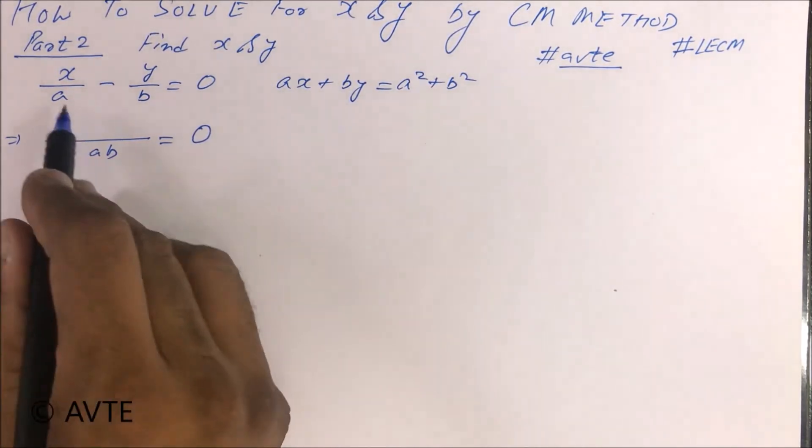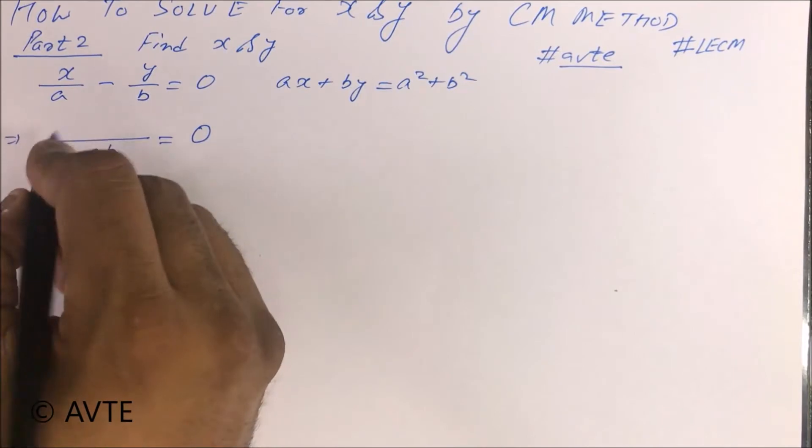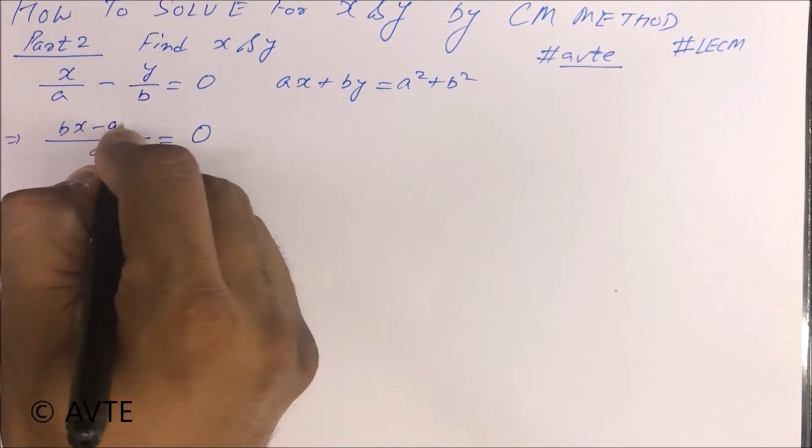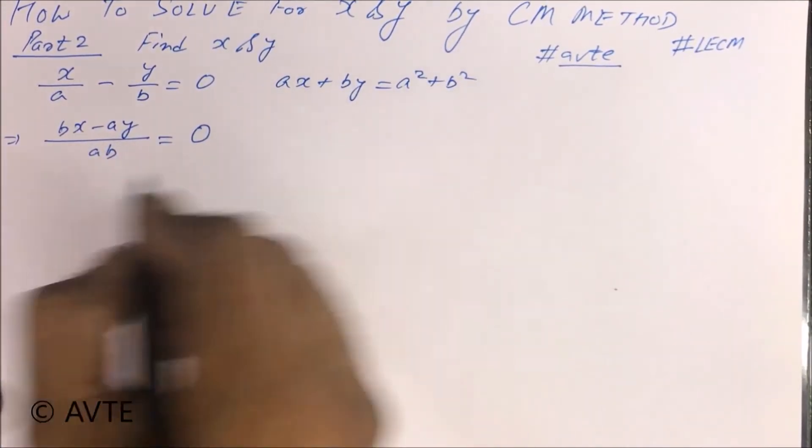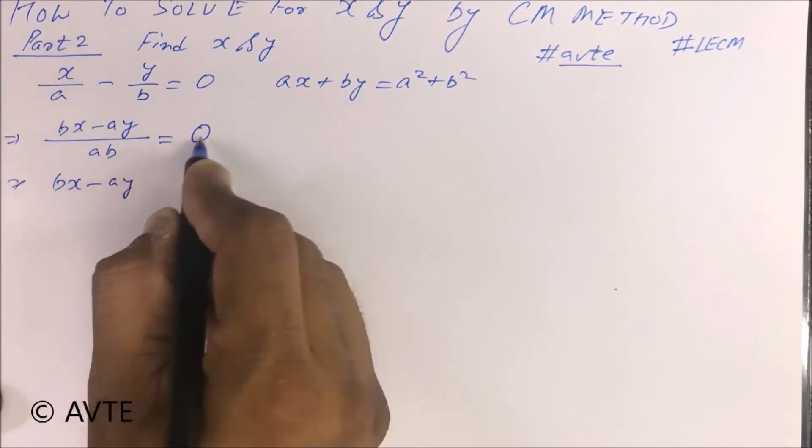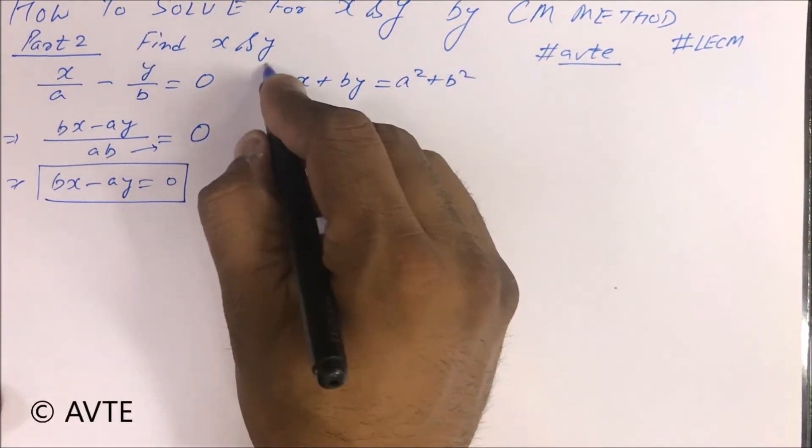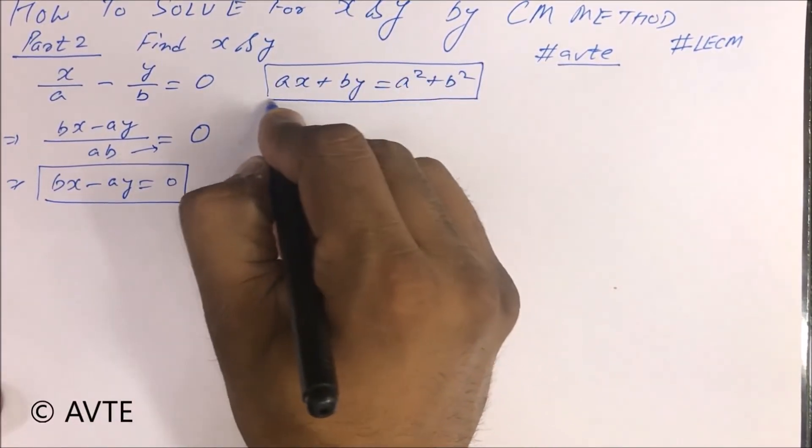So friends, now we take an LCM of this equation AB. BX minus AY is equal to 0. So the equation is BX minus AY is equal to 0. This is your first equation and this is your second equation.